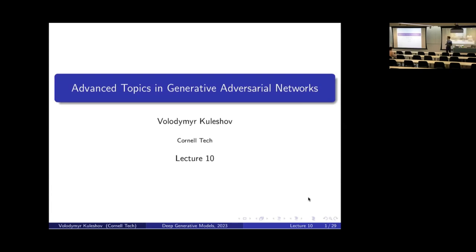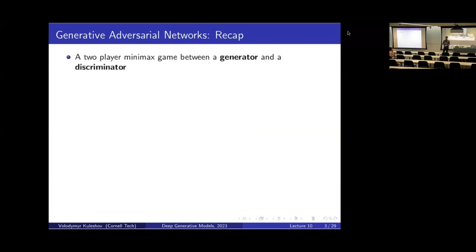This is our second lecture on GANs. Remember from the last lecture, generative adversarial networks can be viewed as a game between two neural networks — one is a generator, the other is a discriminator. The generator defines a probabilistic model that takes samples from a simple input space like a Gaussian and transforms them into something that looks like our output space, such as images or audio waveforms.